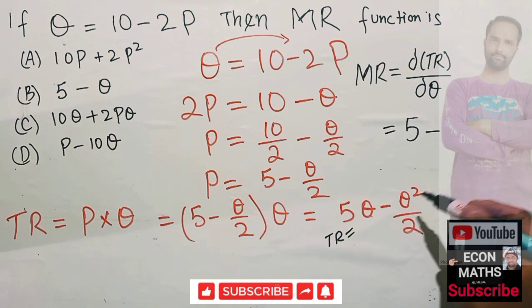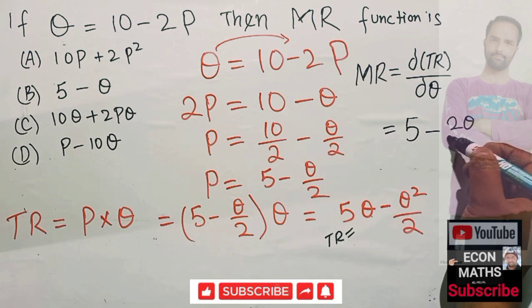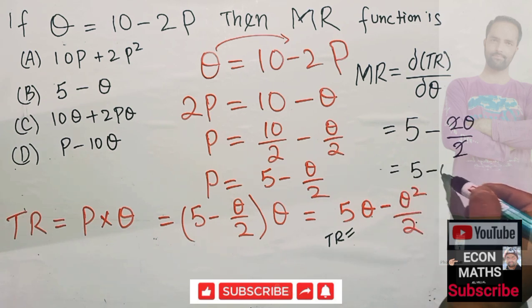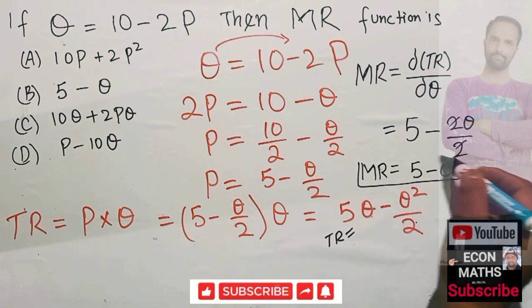left with 5 minus - derivative of Q square will be 2Q - and we have this 2 here, so 2 and 2 gets cancelled. So we get 5 minus Q, which is our marginal revenue.